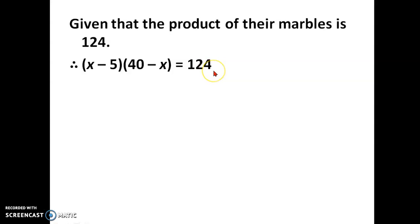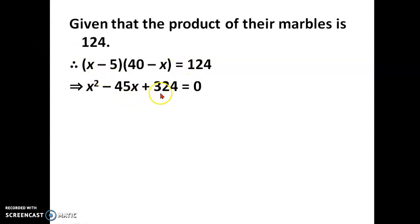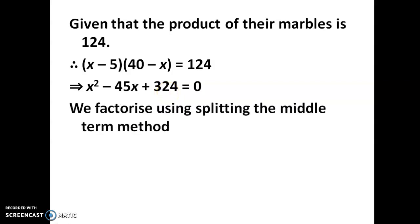Now simplify by removing the brackets. You get x squared minus 45x, and bringing the constant to the LHS gives 324. After simplifying, the equation becomes x squared minus 45x plus 324 equal to 0. To find the value of x — and hence the number of marbles — we factorize using splitting the middle term.